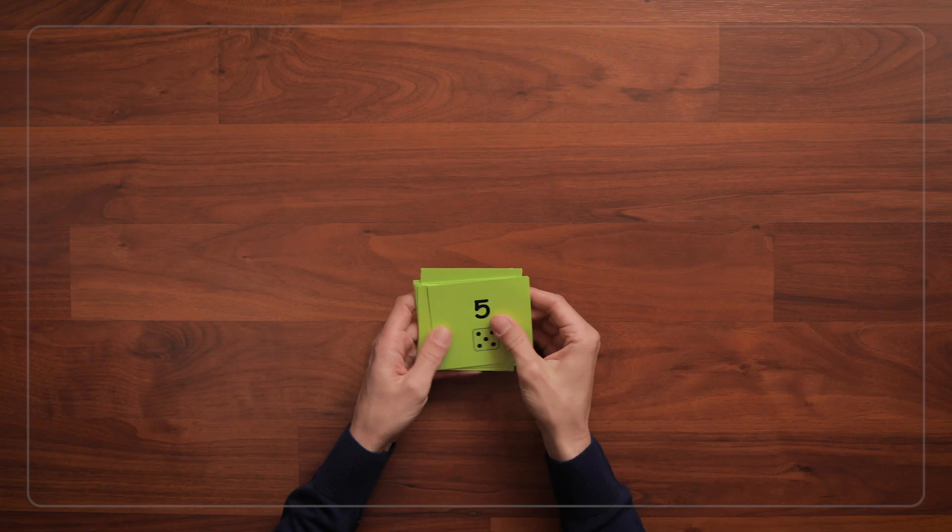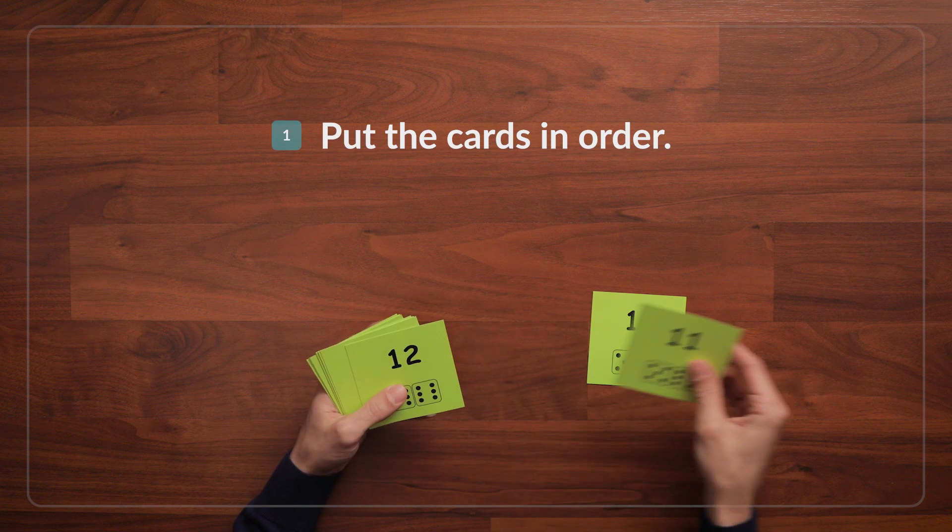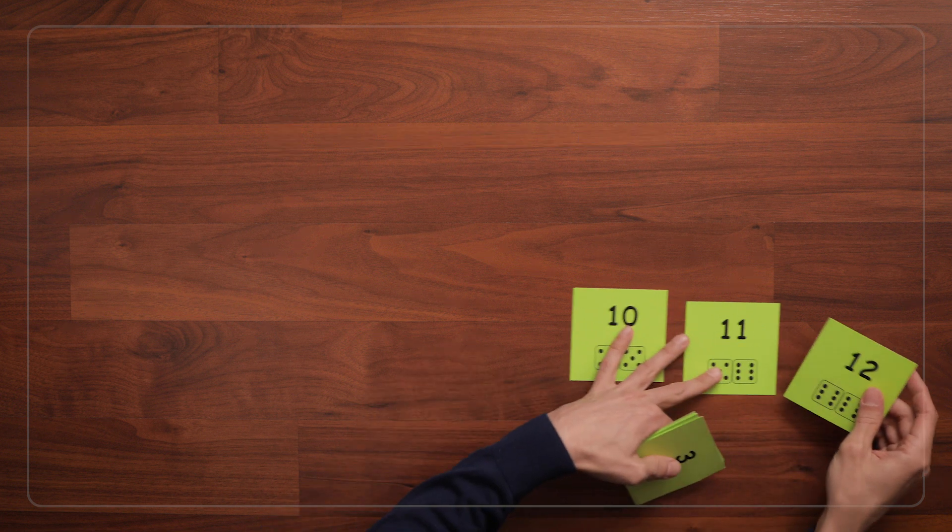Just like in Roll 2 1-6, we'll give each child a set of cards and ask them to put their cards in order, but this time there are a lot more cards.